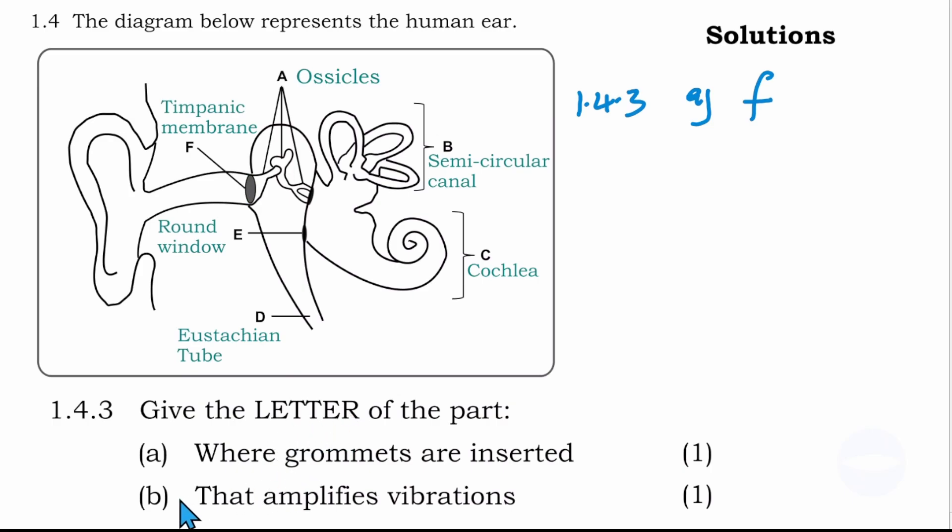Number B says give the letter of the part that amplifies vibrations. The one that amplifies vibrations are ossicle bones. This bone's function is to amplify vibrations. They take the vibrations from the tympanic membrane, increase it, then transfer it to the cochlea. So here the letter is letter A.